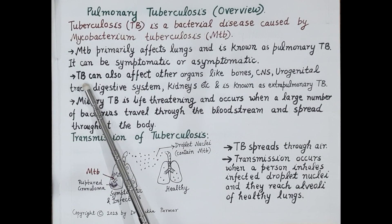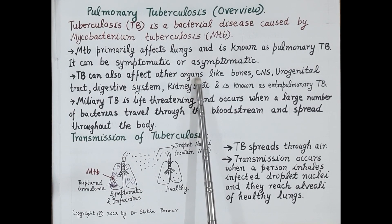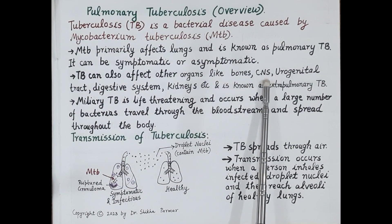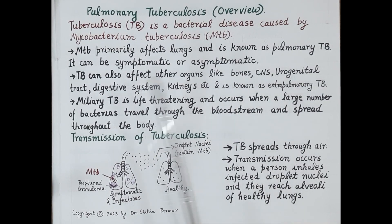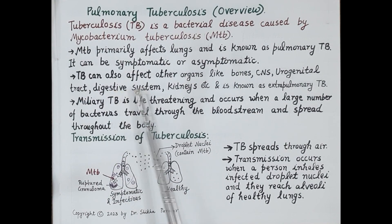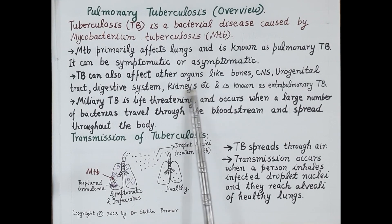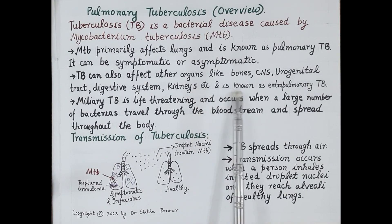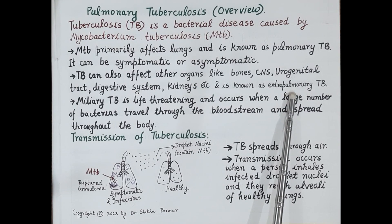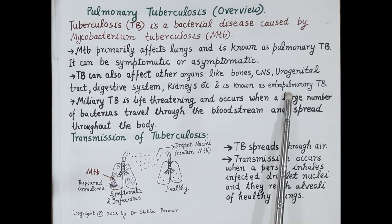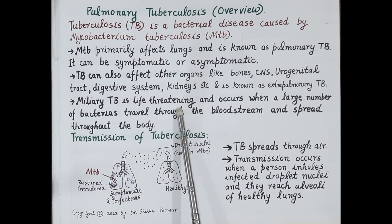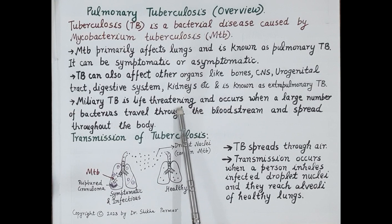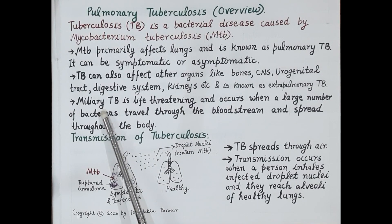Besides the lungs, when the tubercle bacilli affects other organs of the body — like bones, the central nervous system, urogenital tract, digestive system, kidneys, etc. — the TB is known as extra-pulmonary TB. Another type of life-threatening and potentially fatal TB is miliary TB.